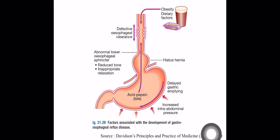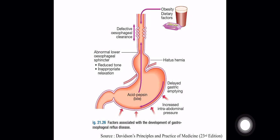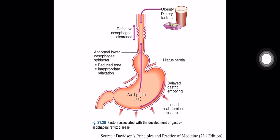These illustrations show the predisposing factors for GERD: increased abdominal pressure such as pregnancy, ascites, and intra-abdominal malignancy; obesity; and dietary factors. Hiatus hernia is also a predisposing factor for GERD, as are other causes that lead to an abnormal esophageal sphincter and defective esophageal clearance.